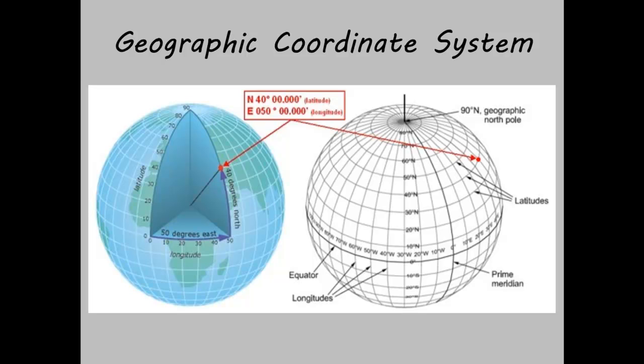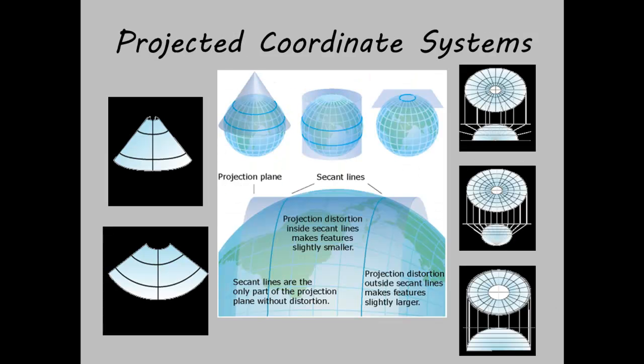This is where a projected coordinate system comes in handy. A projected coordinate system, or PCS, is defined on a flat, two-dimensional surface. Unlike a geographic coordinate system, a projected coordinate system has constant lengths, angles, and areas across two dimensions. However, a PCS is always based on a GCS.